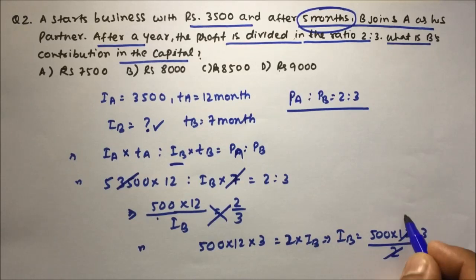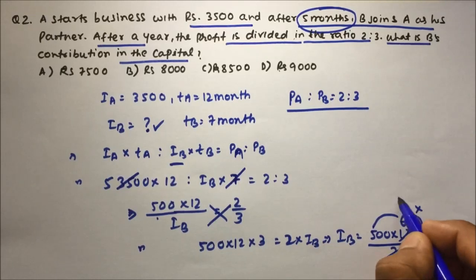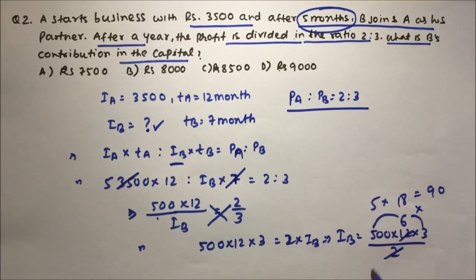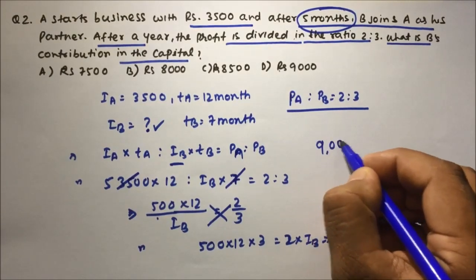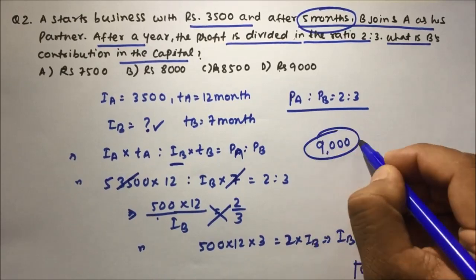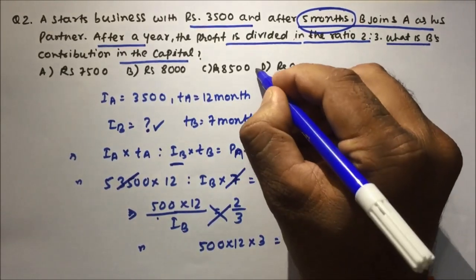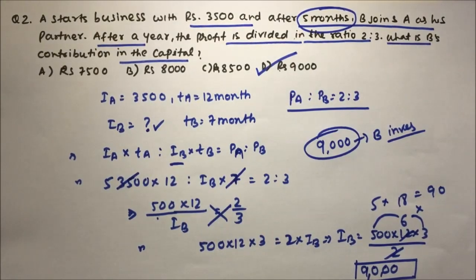Solving: 500 × 12 × 3 / 2 = 500 × 18 / 2 = 500 × 9 = 9000 rupees. So 9000 rupees is the investment by B — B's contribution to the capital. Option D is the correct answer. Thanks for watching the video.